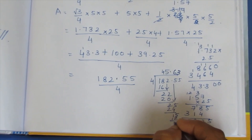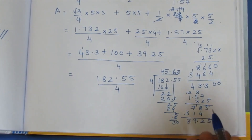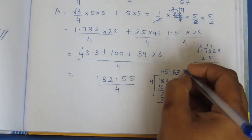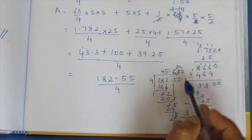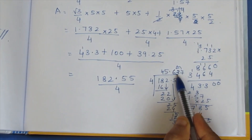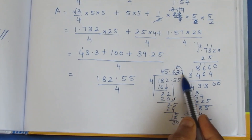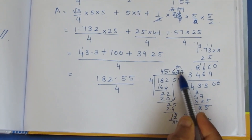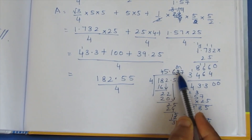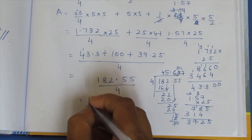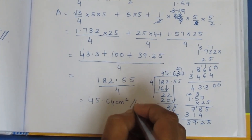Remainder 3. Bring down 0: 4 sevens are 28, remainder 0. We now have three decimal places. The digit 3 is less than 5, but the next digit is more than 5, so we round up. Therefore the answer is 45.64 square cm. Since the last digit is more than 5, we round off to get 45.64.